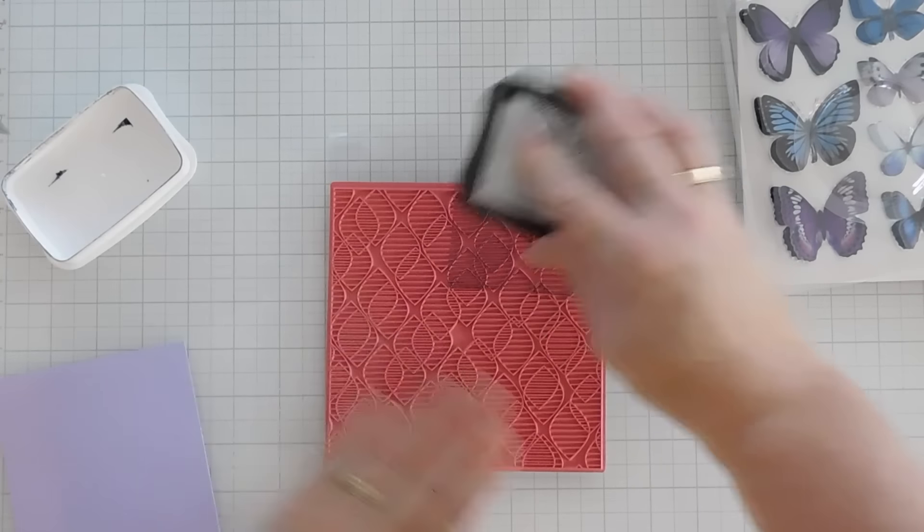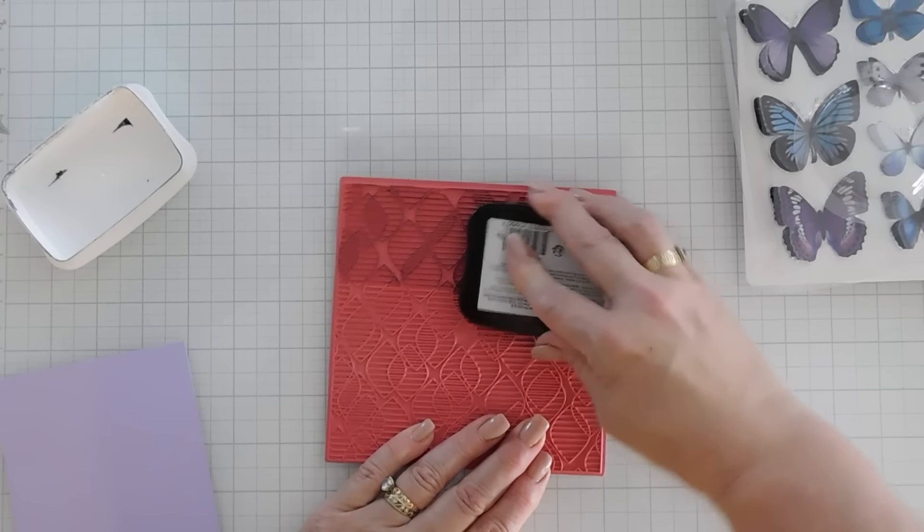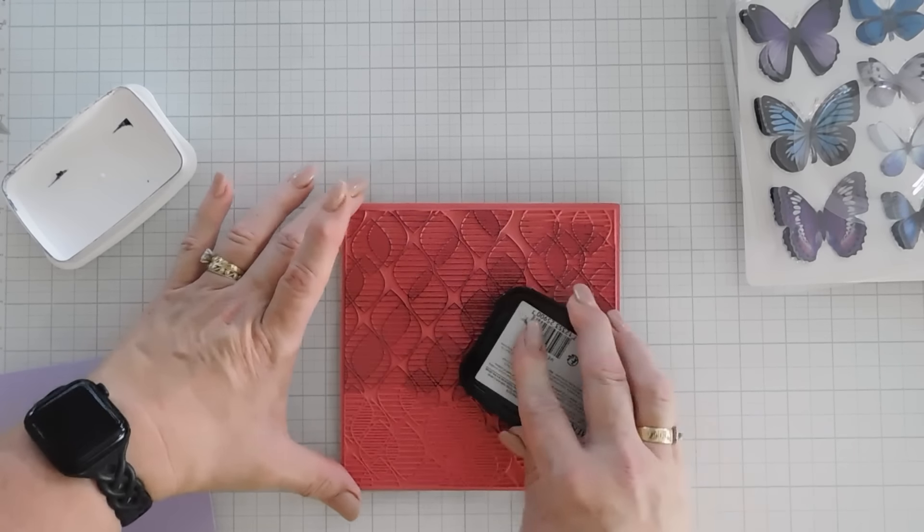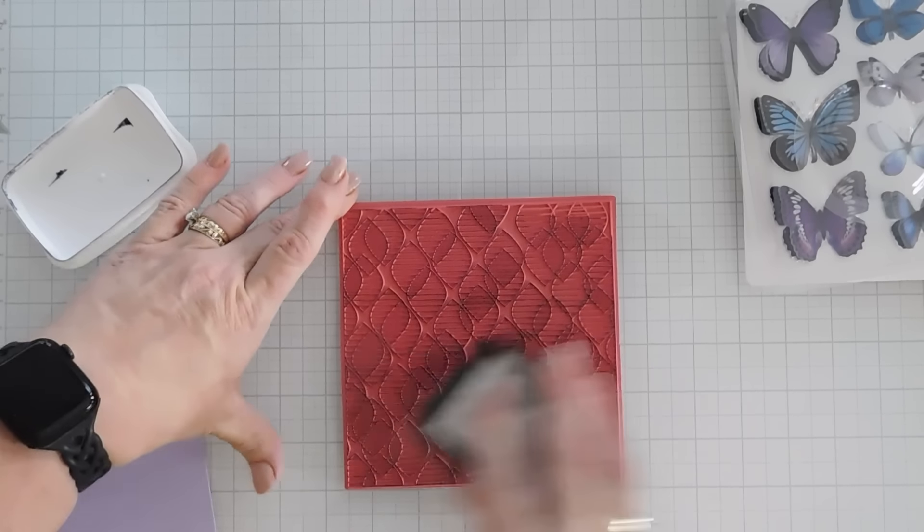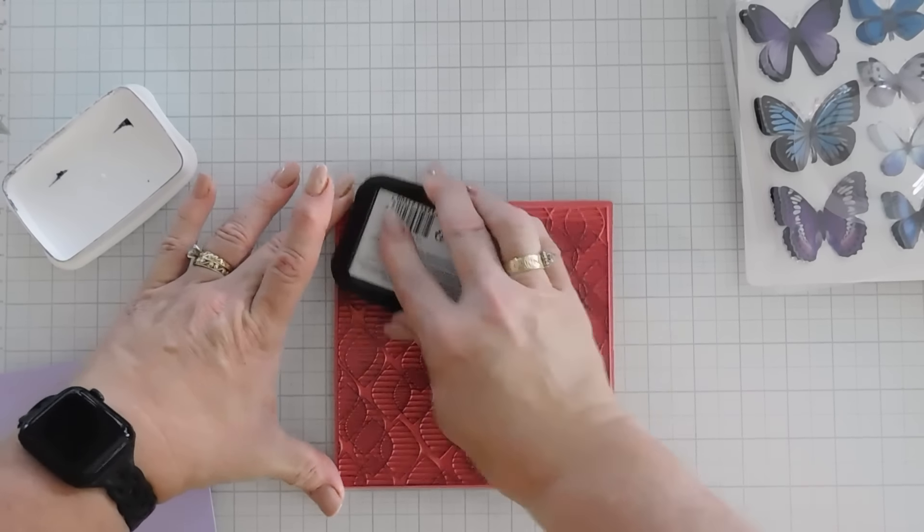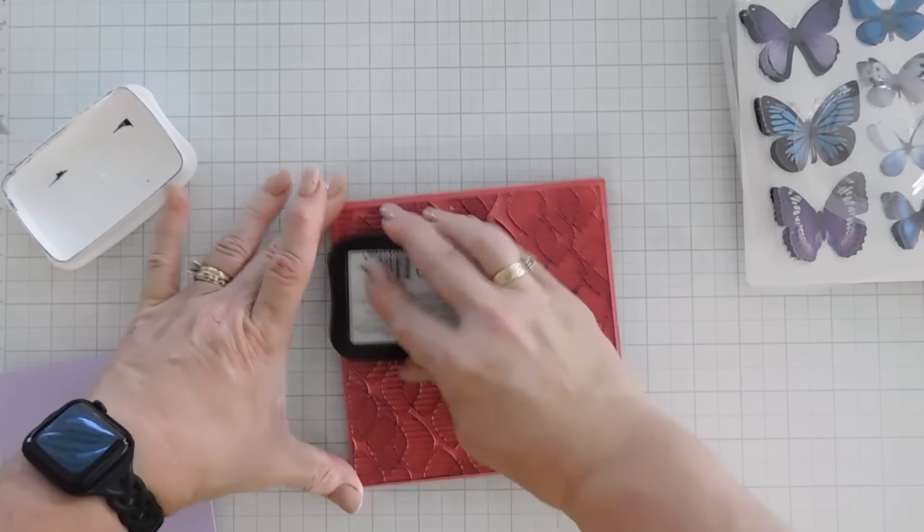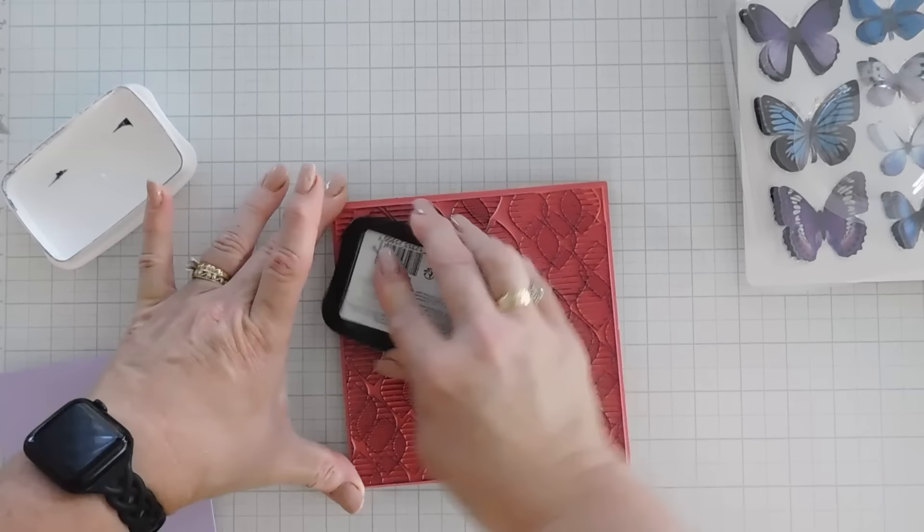But I thought it'd be something different. Okay, so let's first of all create our card base. I'm going to put these over here. My card base today, I want to use lavender cardstock. And I do want to do background stamping on here. So let's do that first.